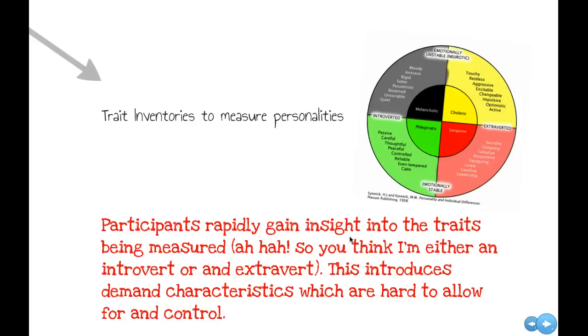So you get that effect where people go, I understand what you're doing now. You think I'm either this one or that one, introvert, extrovert, neurotic, stable. And that introduces demand characteristics. Now, if the demand characteristics all went one way, it would be easier to handle, but they don't. Sometimes people experience the demand characteristic to make themselves more socially desirable, and other people experience it as I'm going to mess with your results now, the screw you attitude.